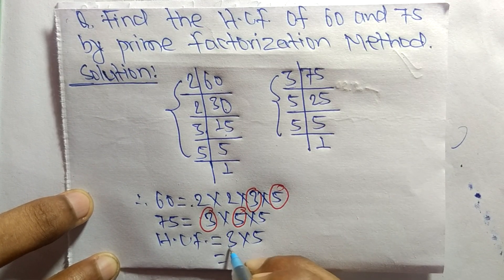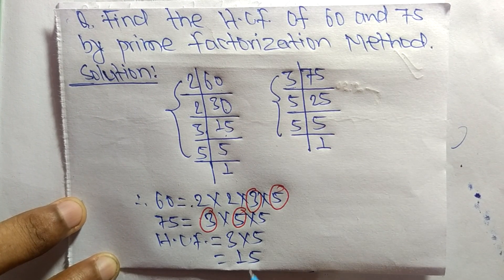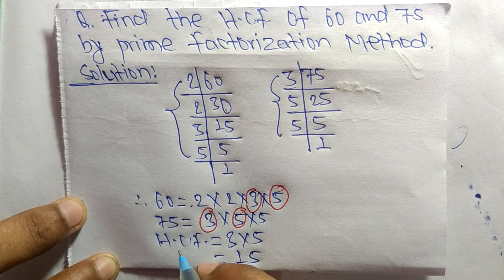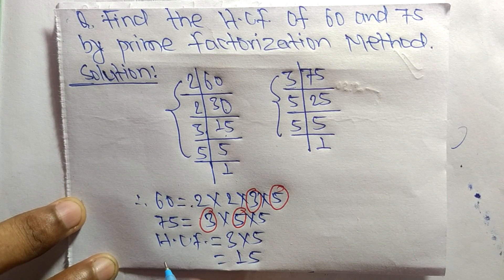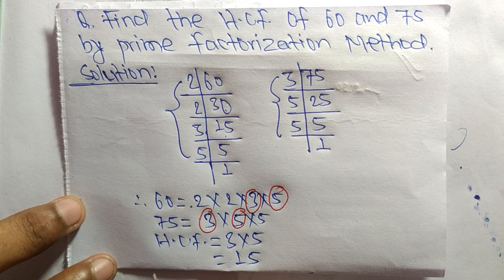So 3 times 5 means it is 15. So 15 is the HCF of 60 and 75. That's all for today and thanks for watching.